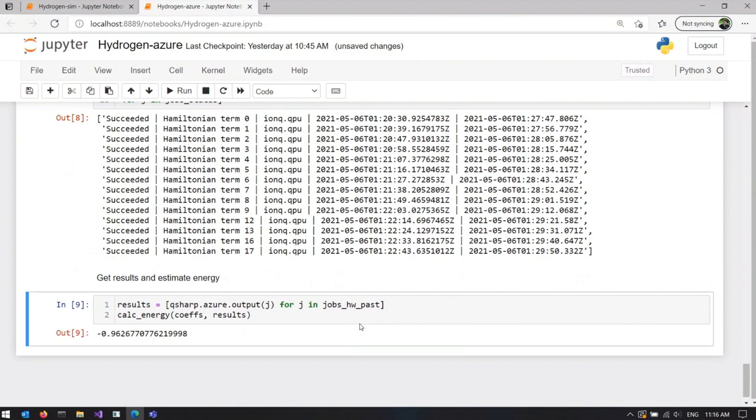You see that this number is not exactly the same as we got in the simulation a moment ago. And this is to be expected. The present-day quantum systems are still noisy, and this noise impacts our results. At the same time, this number was received by running actual jobs on real quantum hardware. Just how exciting is it?